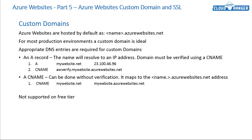What you want to do is tie your current domain to your Azure website and have the appropriate configurations done, so when people go to your domain name — www.cloudranger.net for example — they will see your site based on your personal domain name. There will be no indication of azurewebsites.net even though it's hosted in Azure.